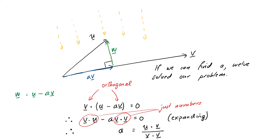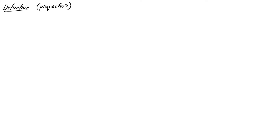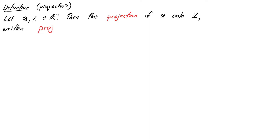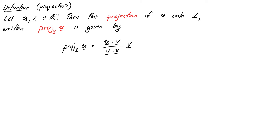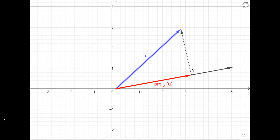This shadow has a special name — it's called the projection of u onto v. Let's summarize it with a slightly more formal definition. Let u and v be vectors in Rⁿ, then the projection of u onto v, written proj subscript v of u, is given by: the projection of u onto v equals (u dot v over v dot v) all times the vector v.